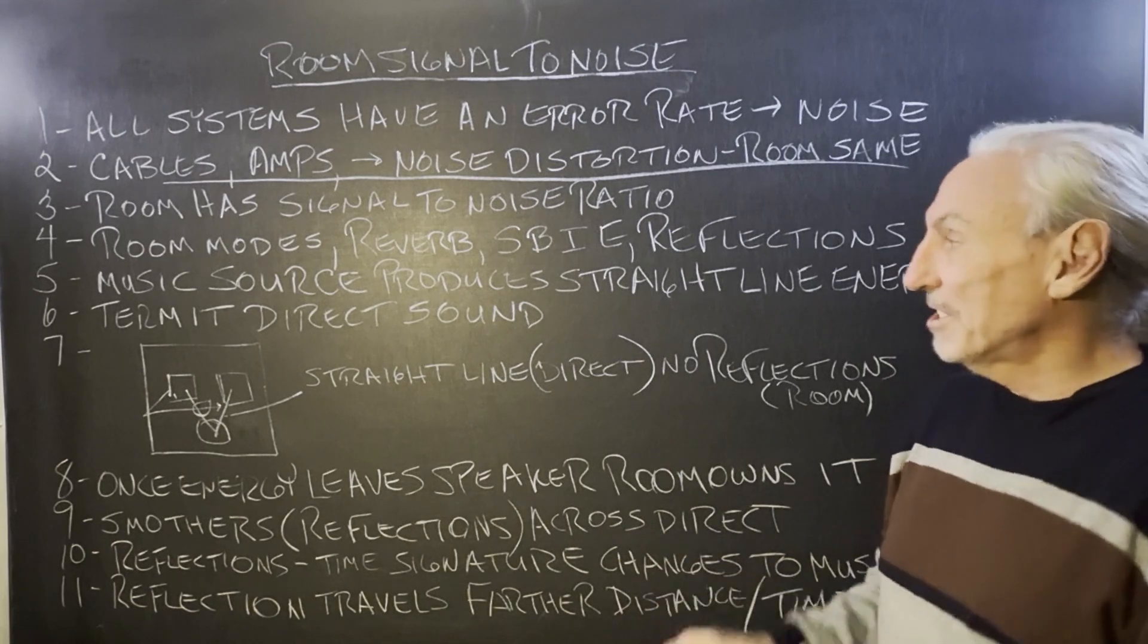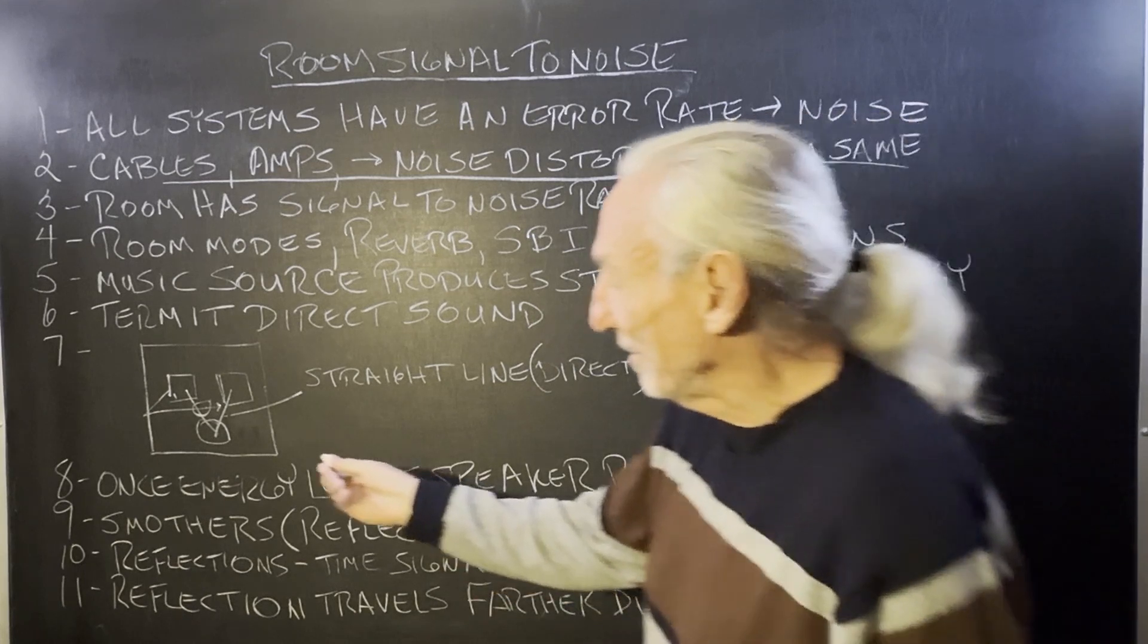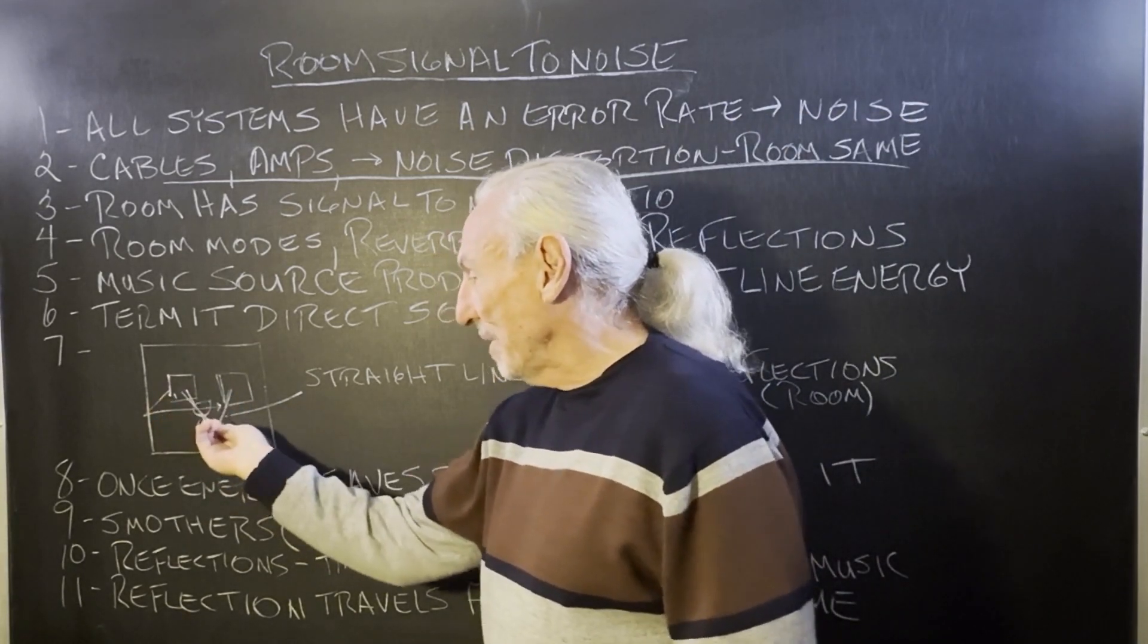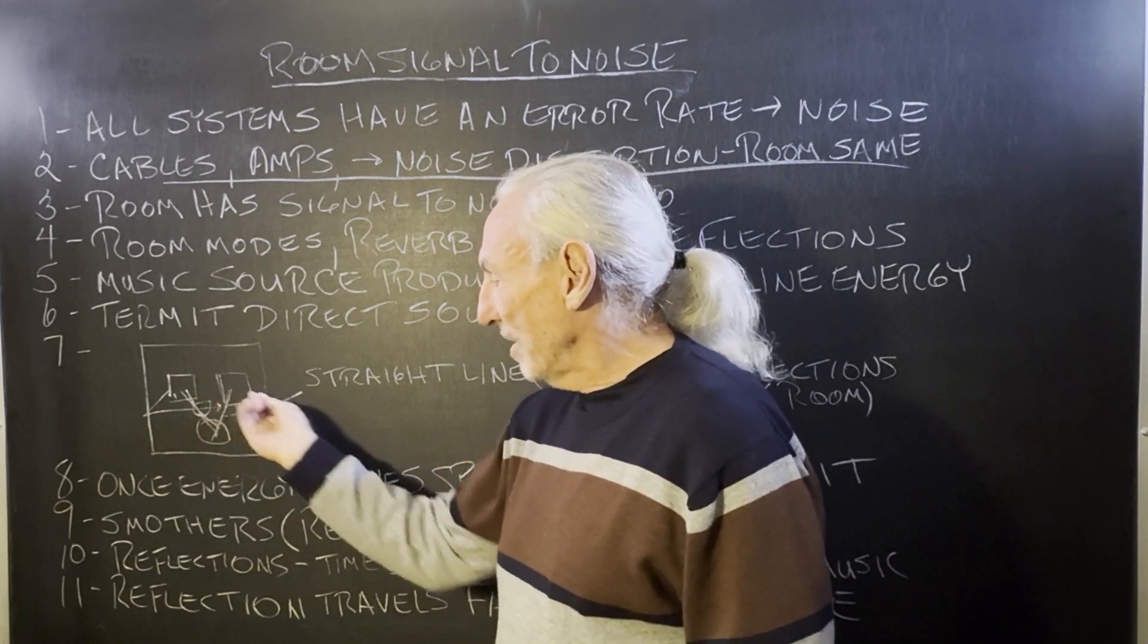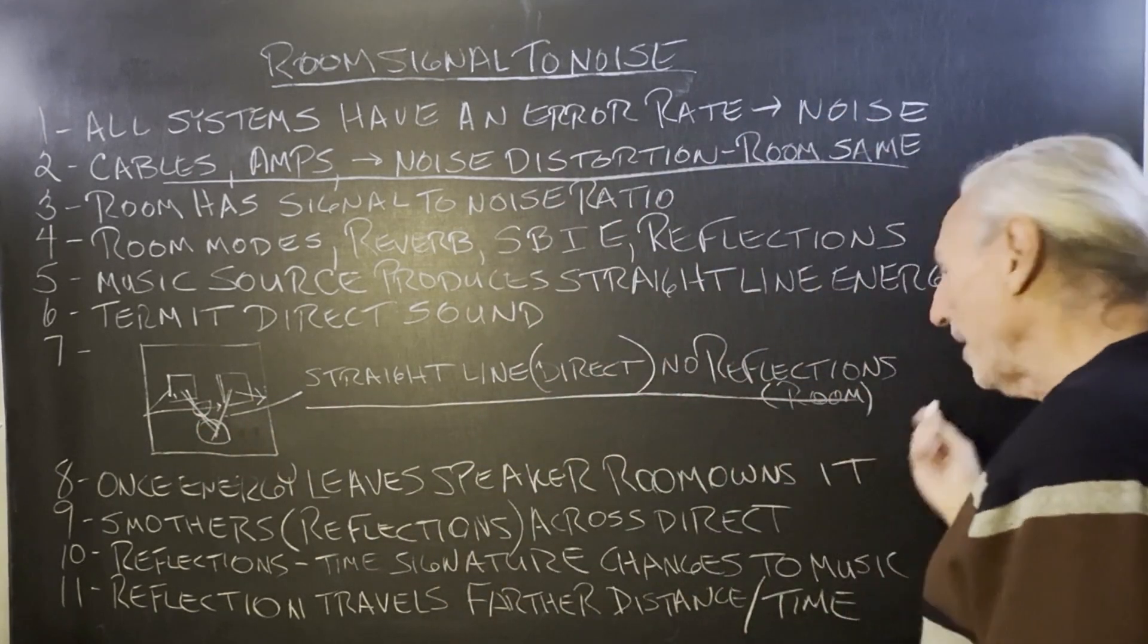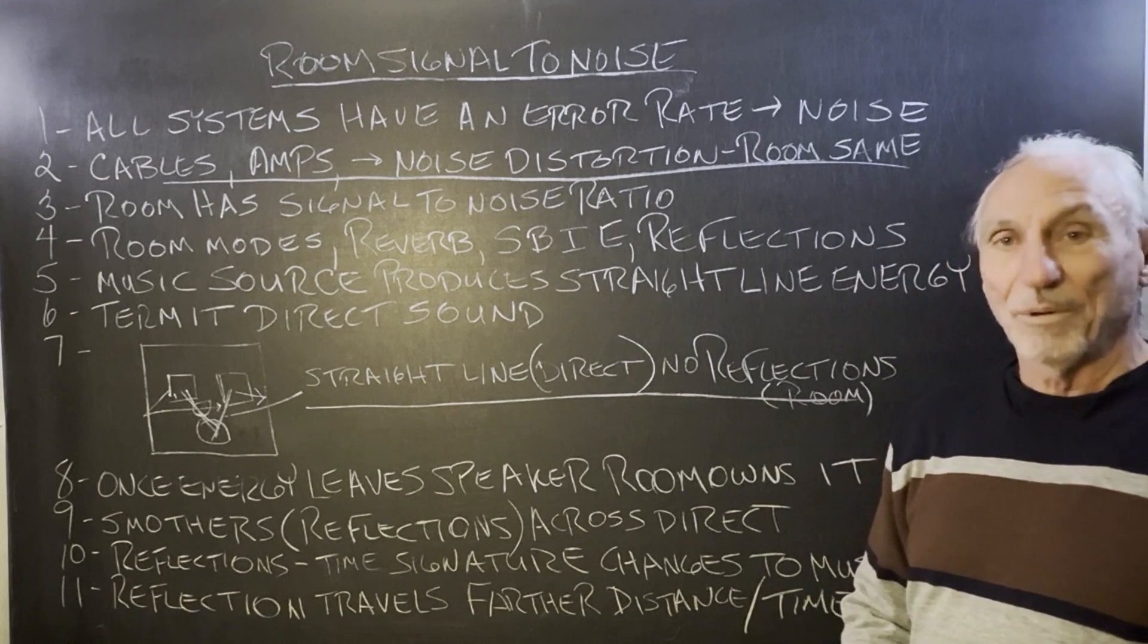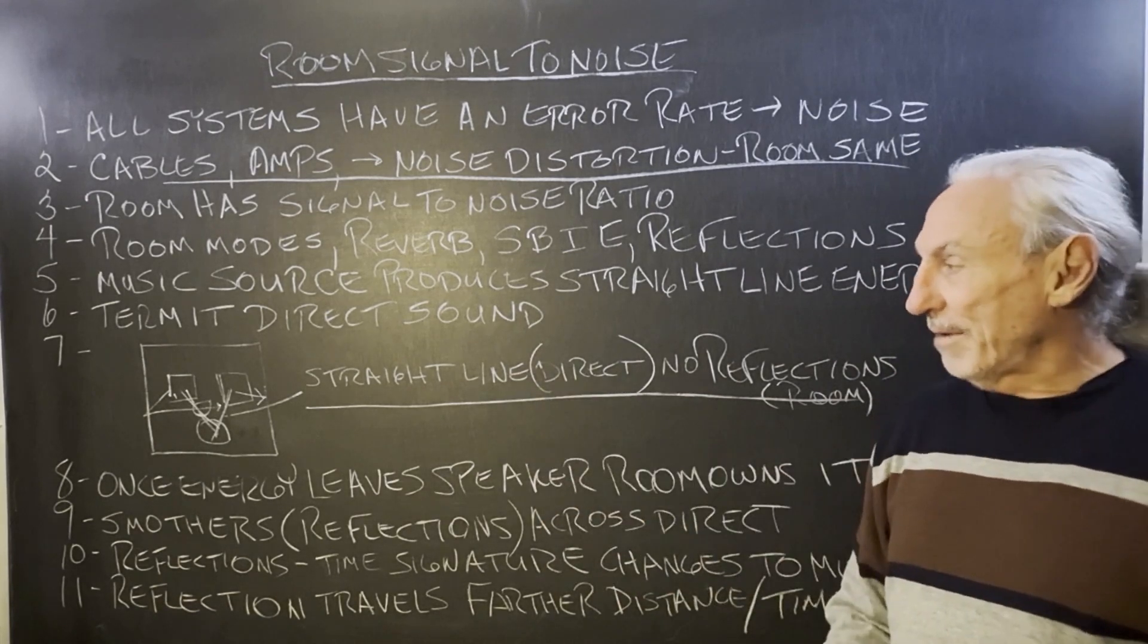And what's the signal? Well, music source produces that straight line energy, right? We like that straight line energy from out of our speakers. It's traveling the shortest distance to our ears, and it doesn't include the reflections or room sound. So let's call it straight line or direct energy. That's the energy without reflections, without the room sound. And that's really what we're after.